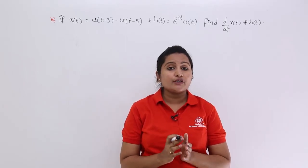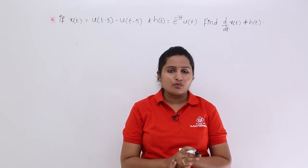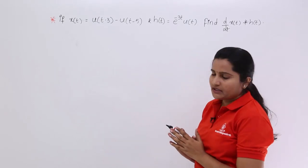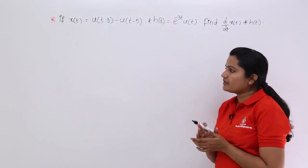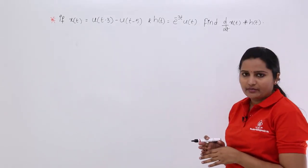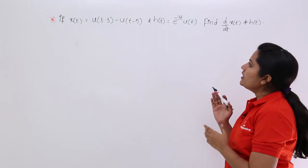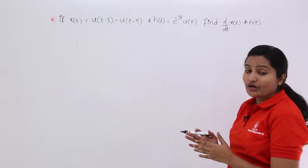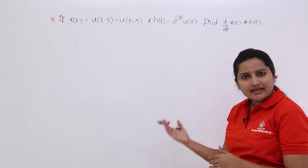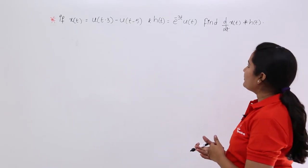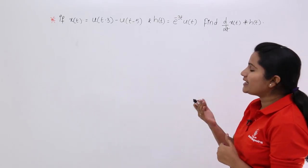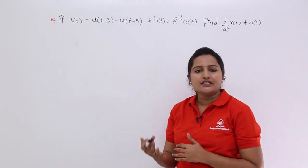In this video, we are going to discuss a problem related to convolution. Observe the problem here: x(t) is equivalent to u(t-3) minus u(t-5), and h(t), the impulse response, is equivalent to e^(-3t)u(t). We need to find d/dt of x(t) convolved with h(t).